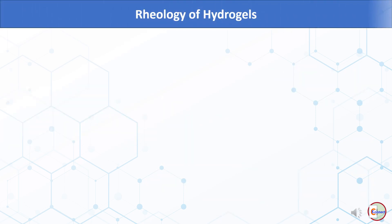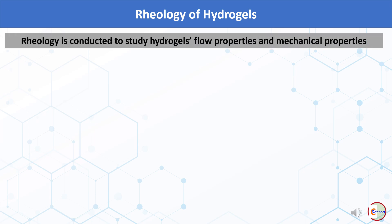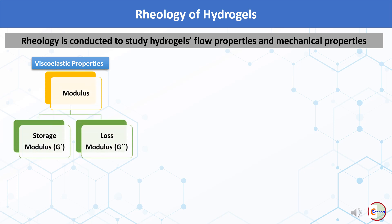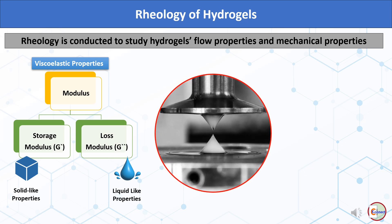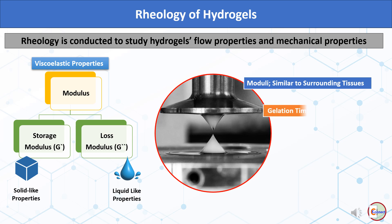The most important characterization of a hydrogel is rheology. Rheology is conducted to study hydrogel's flow properties and mechanical properties. It gives an idea of viscoelastic properties or moduli of hydrogel: storage modulus, which indicates solid-like properties, and loss modulus, which indicates liquid-like properties. Rheology provides important information such as moduli similar to surrounding tissues, gelation time, self-healing behavior, spreadability, etc.